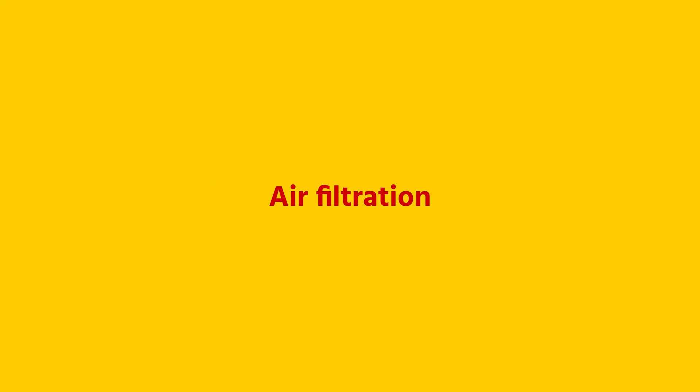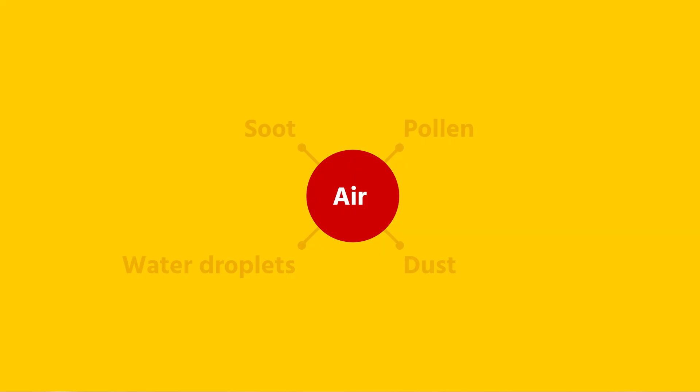Good air quality is important for a long life of your system. Air can contain particles such as soot, pollen, dust, or water droplets. Depending on the components using the compressed air, it may be wise to filter the air to prevent contamination and damage.